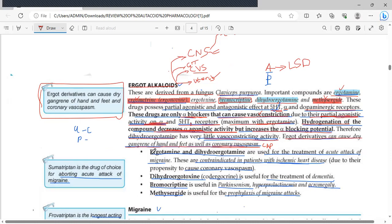Ergotamine and dihydroergotamine can be used in the treatment of acute attacks of migraine. But they're contraindicated in patients with ischemic heart disease because they have the propensity to cause coronary vasospasm. You need to know that the absorption of ergotamine and dihydroergotamine is enhanced by caffeine. So patients, to enhance the absorption across the GIT, take them together with caffeine. We have dihydroergotoxin. Dihydroergotoxin can be used in the treatment of dementia.